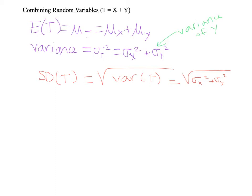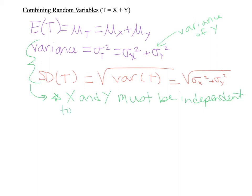For the variance and the standard deviation, we have one small stipulation: X and Y must be independent. They don't have to be independent for the expected value, but to find the standard deviations and variance they have to be independent — meaning one of them won't affect the other. Just keep that in the back of your mind; it'll come up again.